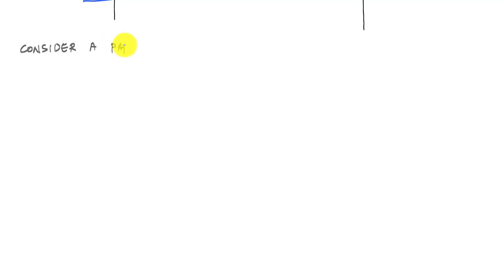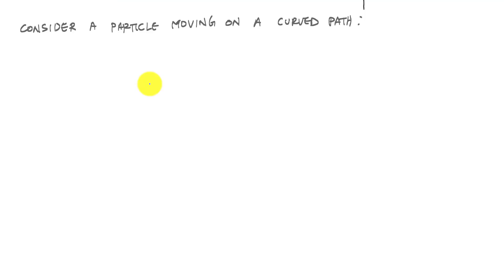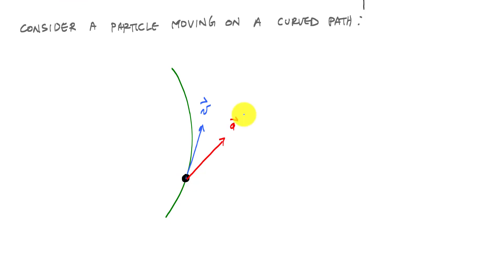Let's start by considering a particle moving on a curved path. We haven't selected a coordinate system yet, and we can define this path's motion using any coordinate system we want — whether it's X-Y, normal and tangential, or radial and transverse. At some instant of time, here is the particle. The particle has a velocity tangent to the path and an acceleration vector.